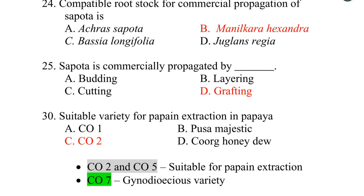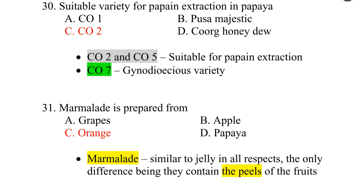The suitable variety for papain extraction in papaya is Co2. Co5 is also suitable for papain extraction. Co7 is a gynodiocious variety. Marmalade is prepared from orange. Marmalade is similar to jelly in all respects, but the difference is that it contains the peels of the fruit — especially orange peel.